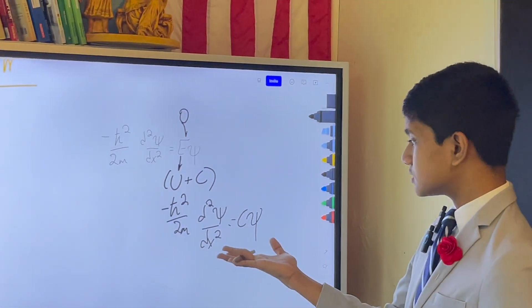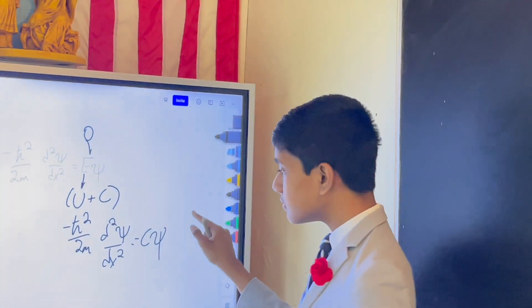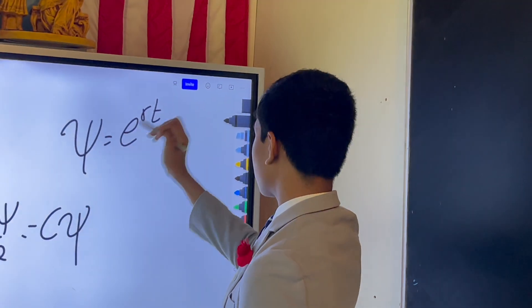So, then, because we have the d squared psi dx squared is proportional to psi, we can assume the ansatz psi is equal to e to the rx.